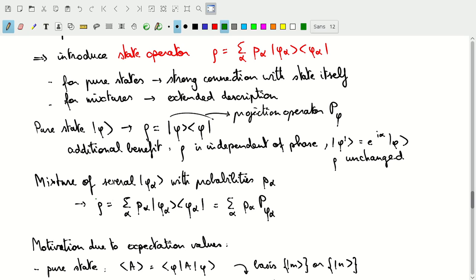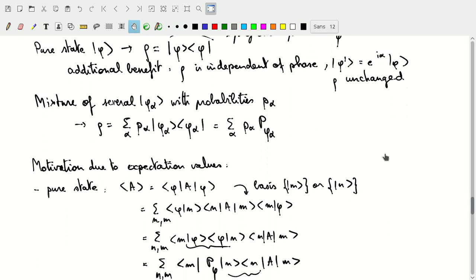Again, the important thing here is that rho is not an object anymore or not an element of the vector space. This rho has now become an operator that operates on our Hilbert space. And so, the state is represented by the state operator, not by a state vector anymore.